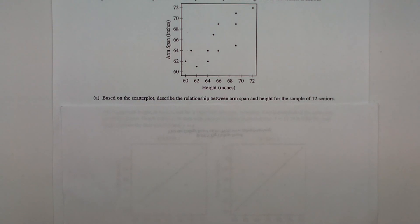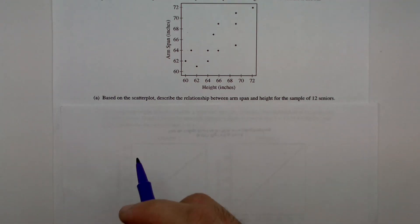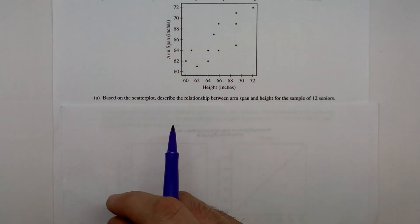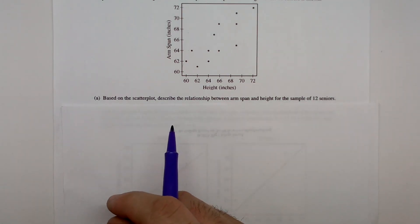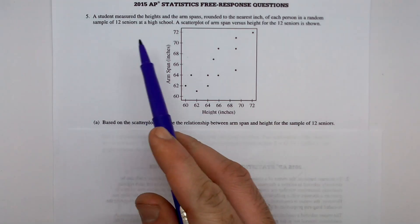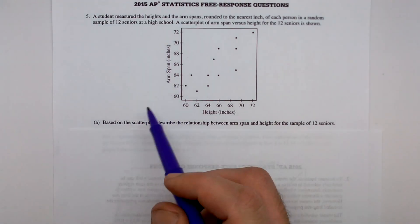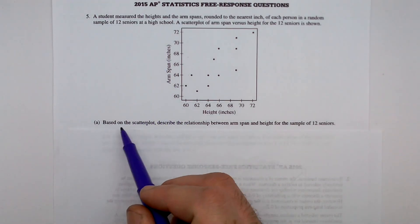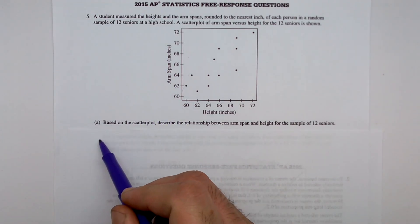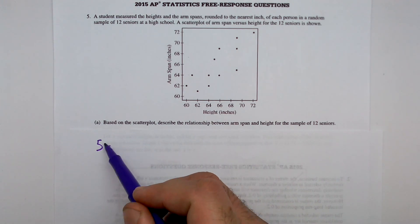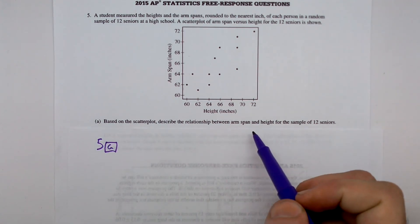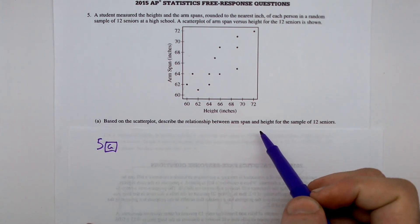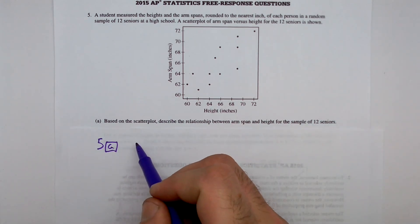In this video, we'll be looking at the 2015 AP Stats free response question number 5. Skipping over the question, assuming you've read that, I'm looking at part A. Based on the scatter plot, describe the relationship between arm span and height.